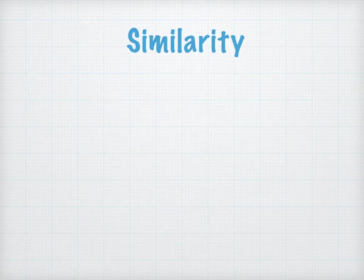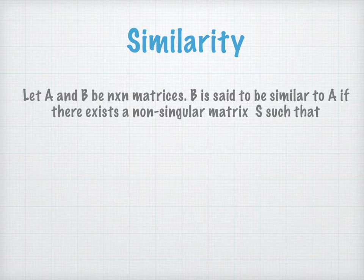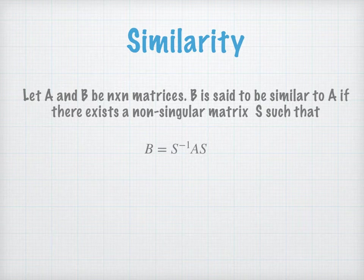This leads us to similarity, which is a concept in linear algebra. It says that if A and B are two square matrices, B is said to be similar to A if there exists a non-singular matrix S such that B equals S inverse times A times S. A and B are similar if there exists a non-singular matrix S satisfying this equation.